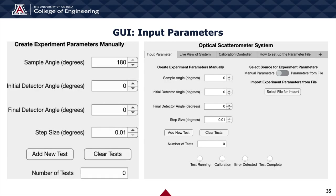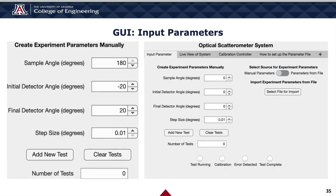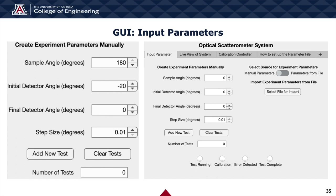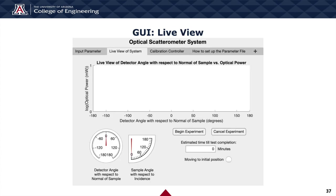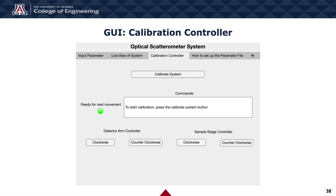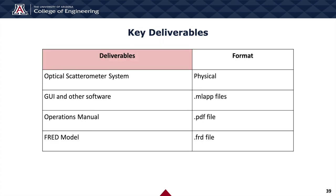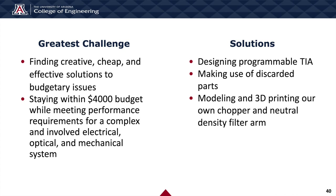Our graphical user interface, built in MATLAB, allows the user to interact with the scatterometer straightforwardly. The user can input the sample angle, initial and final detector angle, and step size, or load these through a parameter file. The GUI features a live graphical view of optical power versus detector angle, allowing the user to see results as data is collected. A calibration controller allows the user to perform system calibration. Deliverables to our sponsor include the physical scatterometer, the GUI and associated software, the operations manual, and the FRED model.